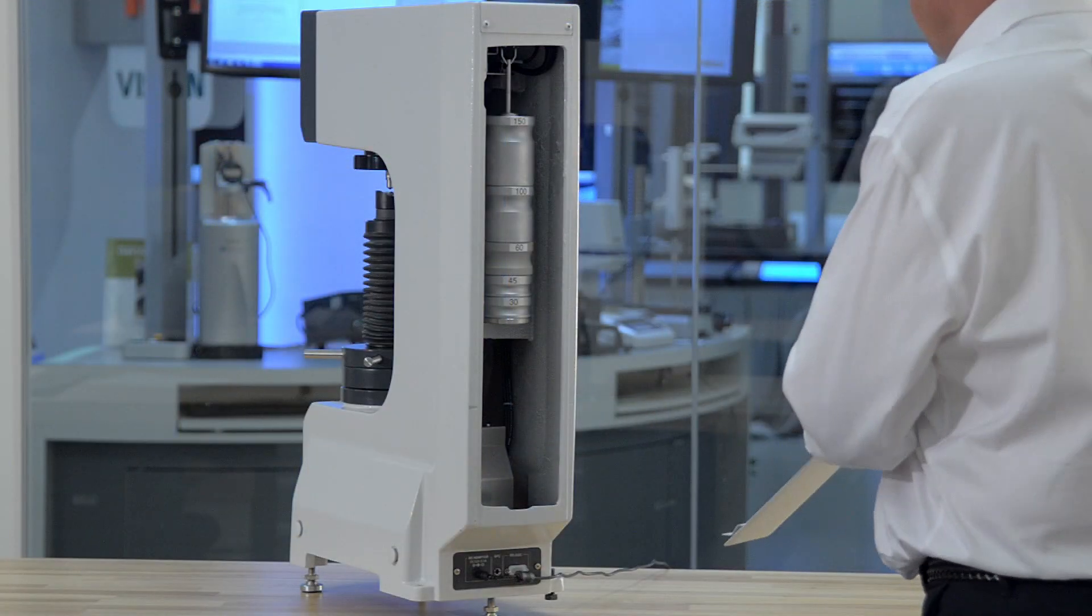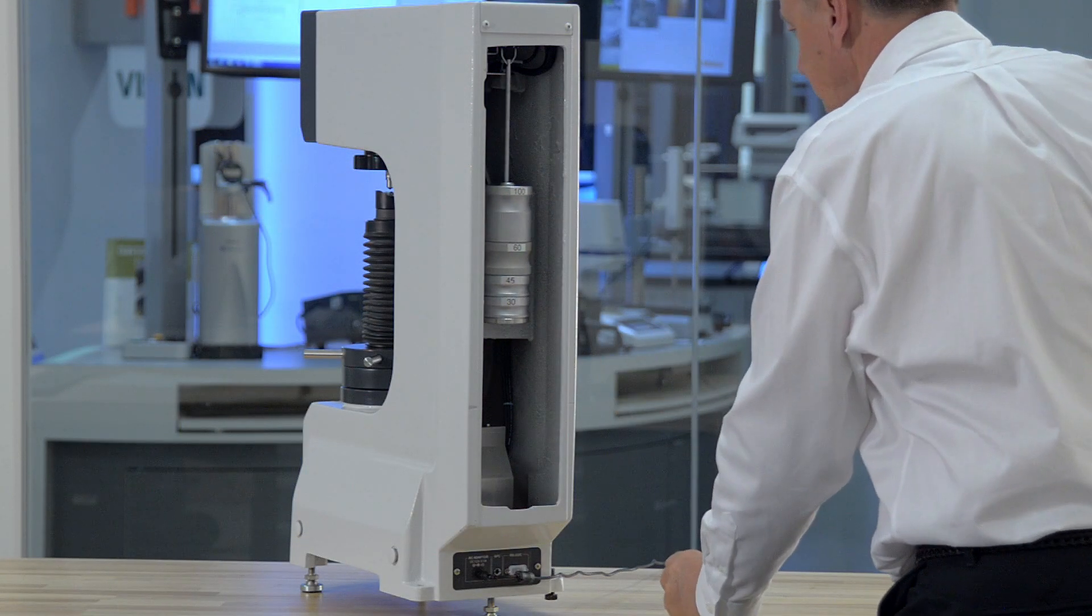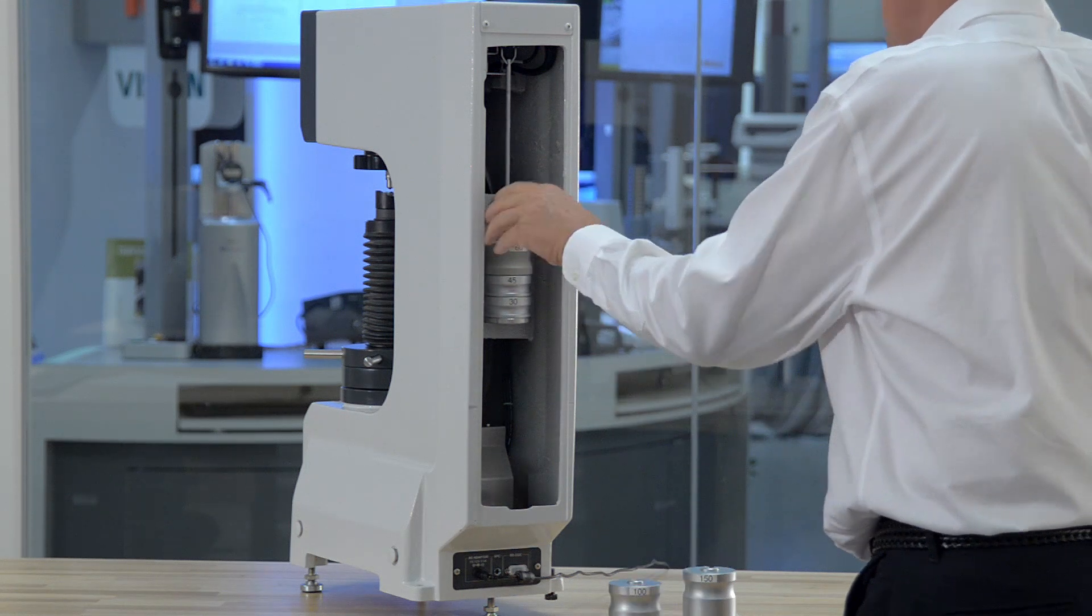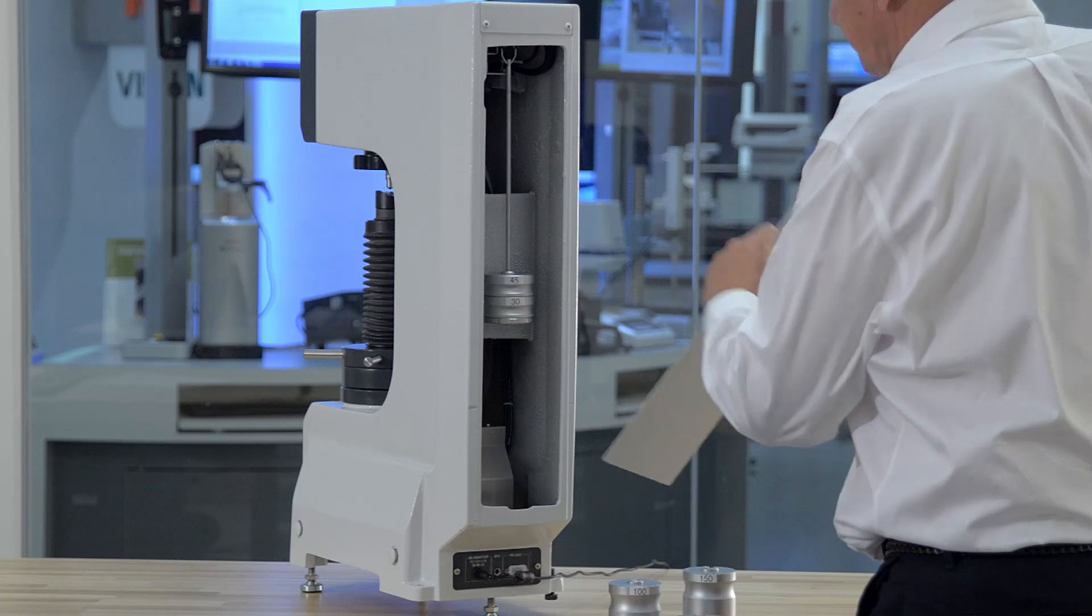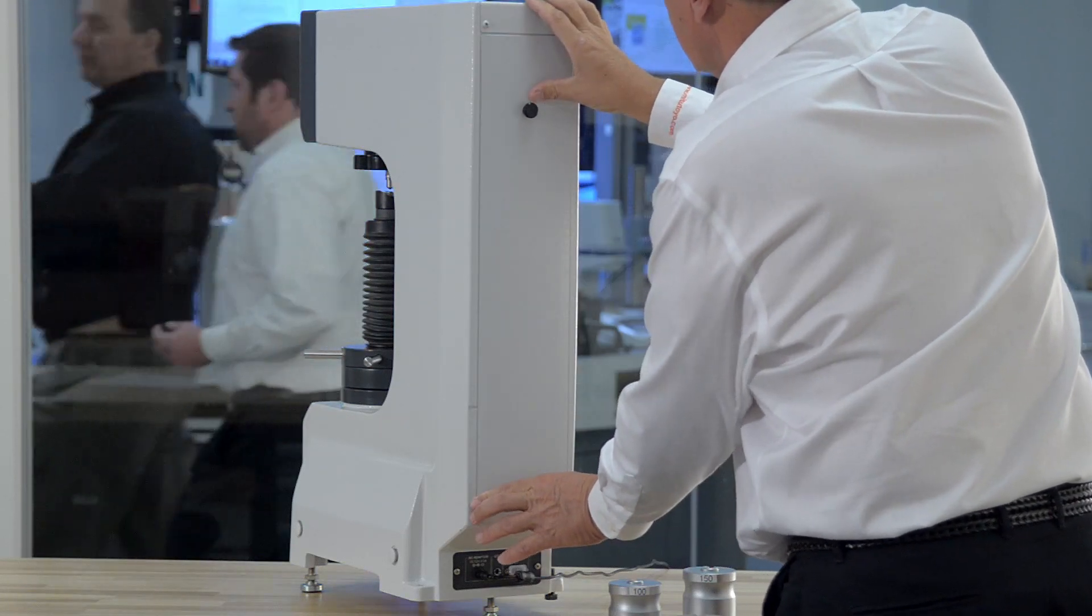Its twin tester design allows the operator to test on all 15 Rockwell scales and all 15 superficial scales when optional indenters are used. The adjustable hanging weight system is used to keep costs down and is a good option when you need a highly versatile tester for future testing requirements.